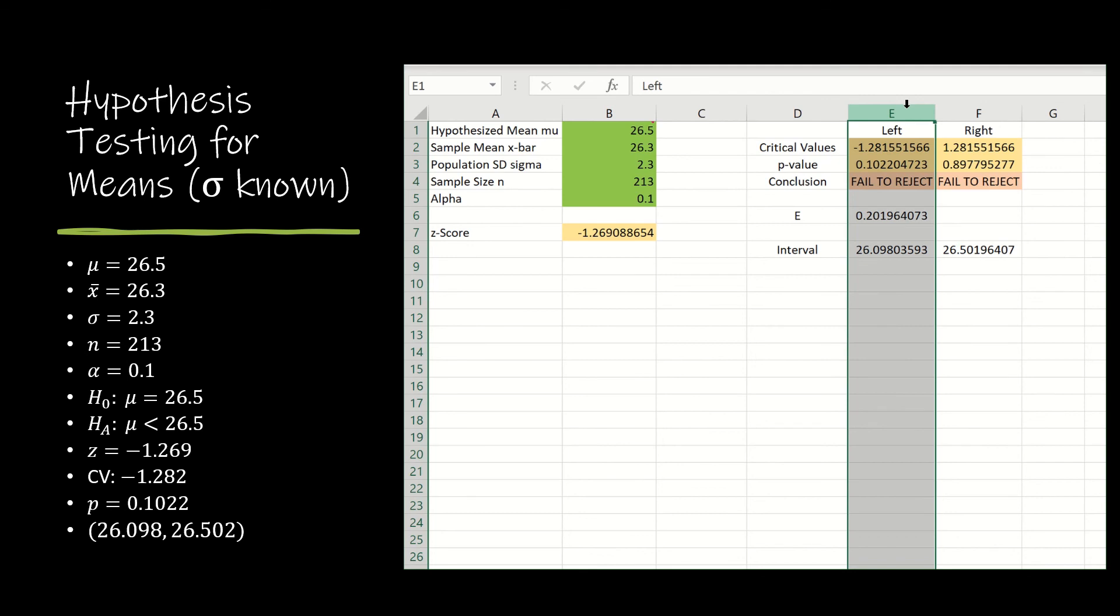And in a left-tailed test, we are looking at the negative critical value, the p-value of 0.1022, which is just the area to the left of our z-score. And then our conclusion to fail to reject matches with what we had found previously.